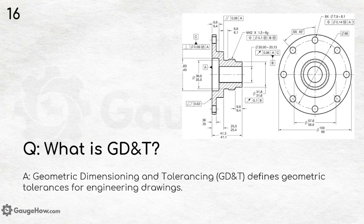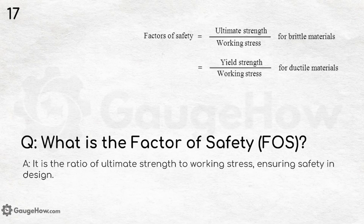What is GD&T? GD&T is Geometric Dimensioning and Tolerancing, which defines geometric tolerances for engineering drawings — a dedicated video has already been posted on this topic. What is factor of safety (FOS)? It is the ratio of ultimate strength to working stress, ensuring safety in design. For brittle materials it is ultimate strength divided by working stress, while for ductile materials it is yield strength divided by working stress.